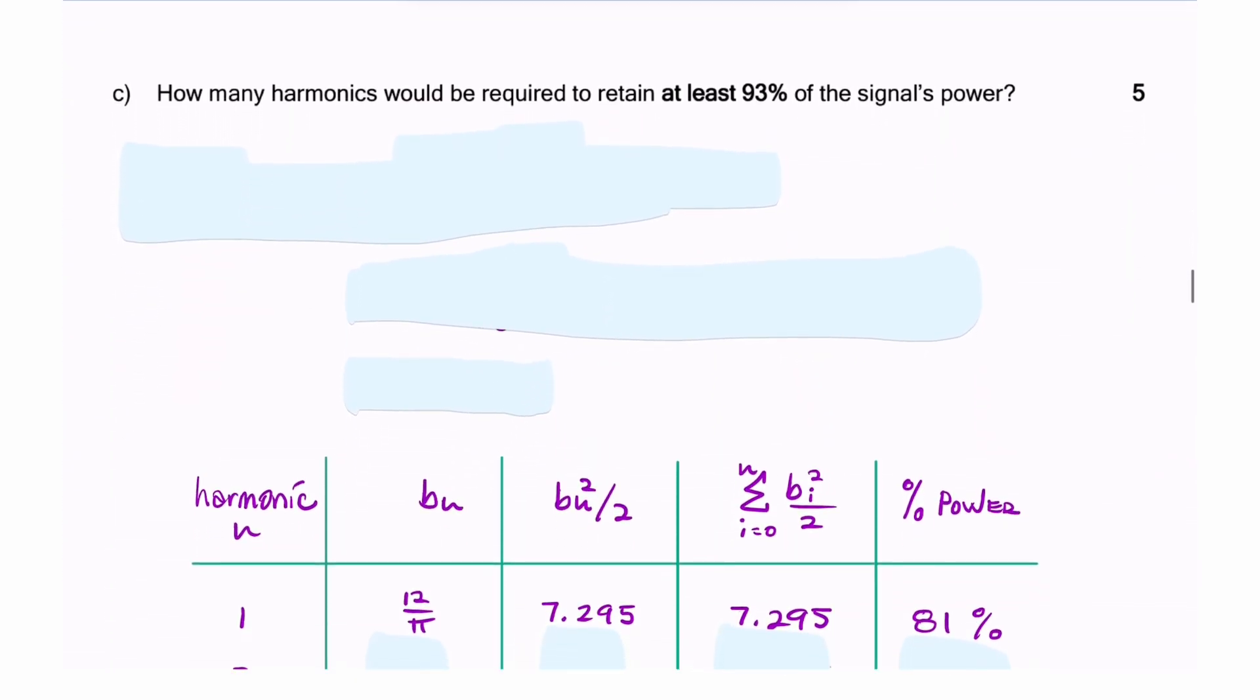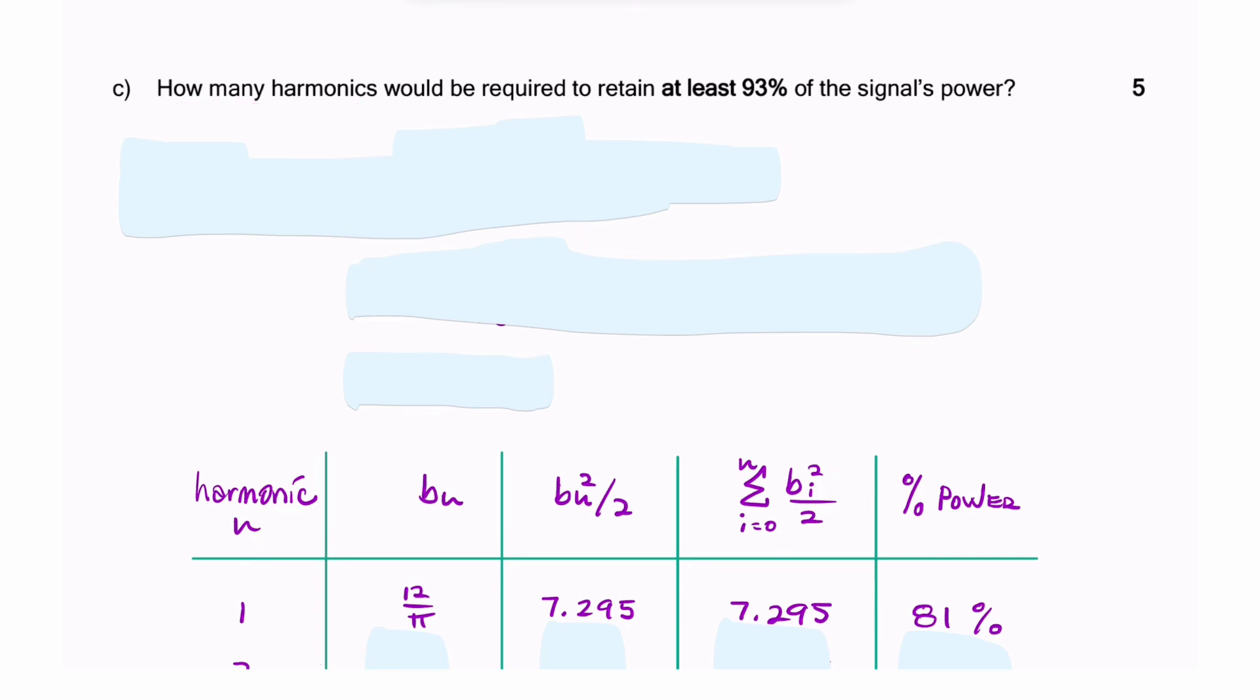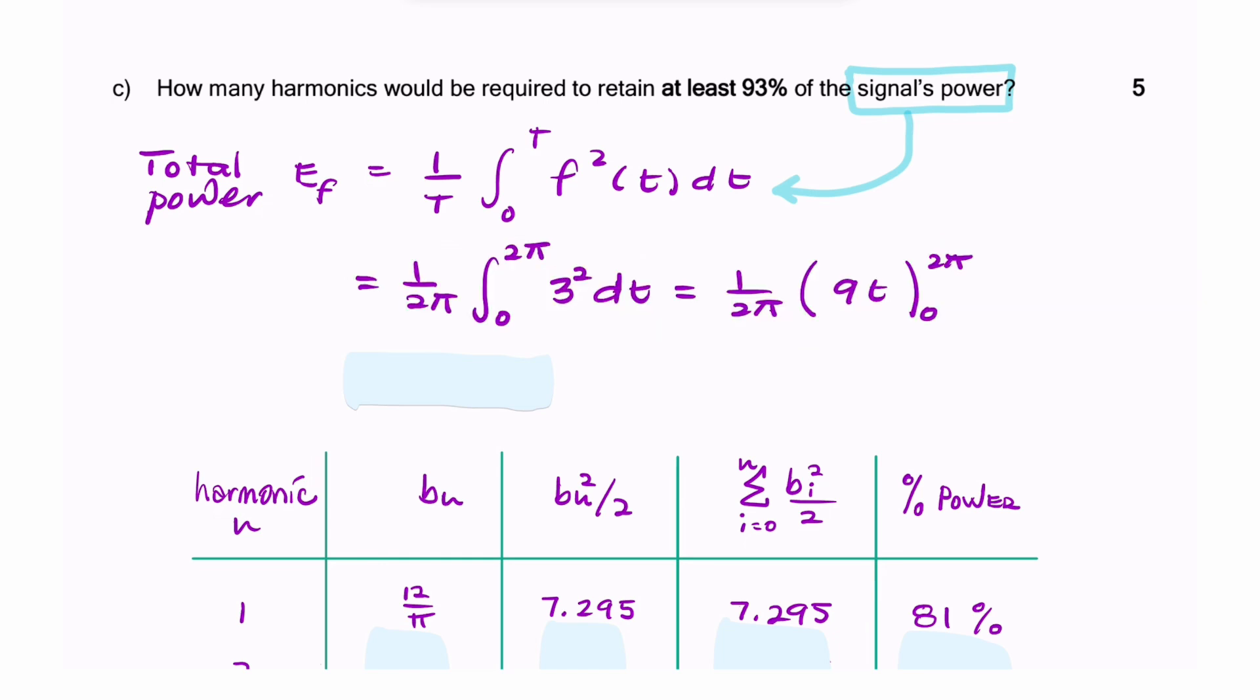Now the question asks, how many harmonics would be required to retain 93% of the signal's power? I think the first thing we should do is find the signal's power. To find the power of a signal, you simply integrate the signal squared over one period, then divide by the period.